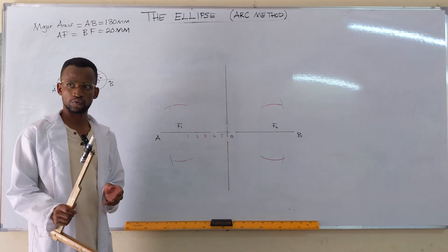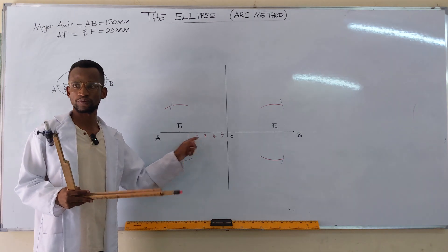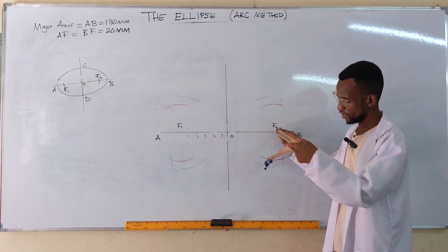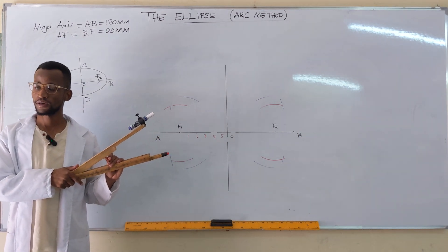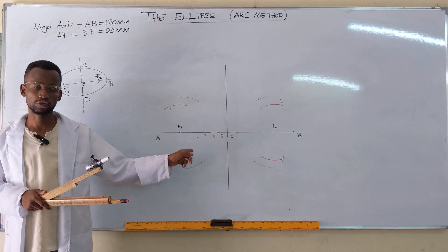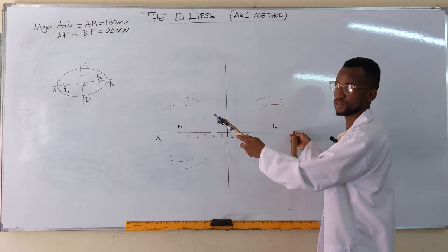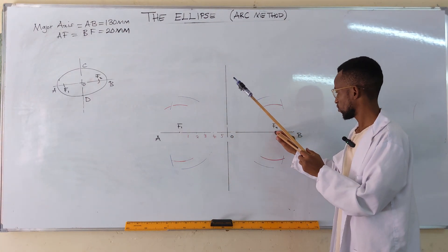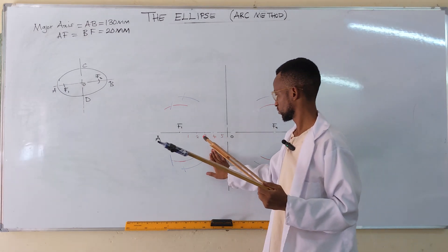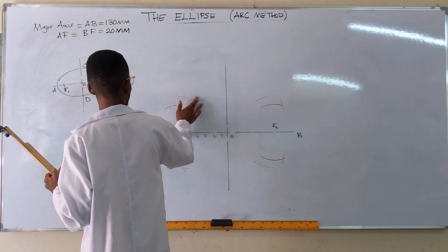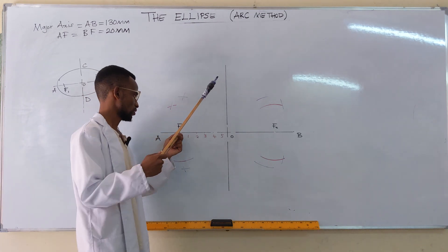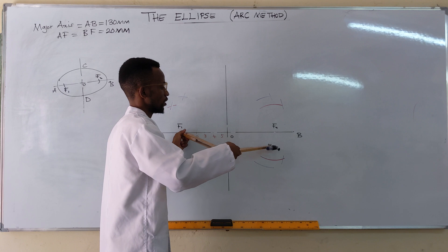For point two, get the distance A2. Then move to point B, open to two to get B2. With distance B2, stand at the focal point and strike an arc above and below. Then stand at focal point one with the same radius and strike arcs there as well.